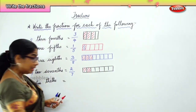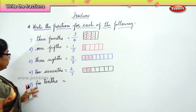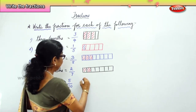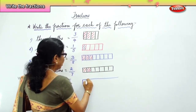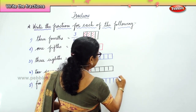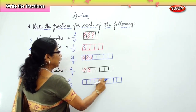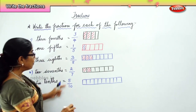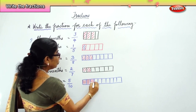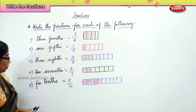Now you have five-tenths. Five-tenths is five parts out of ten parts. Here we have five parts out of ten: one, two, three, four, five, six, seven, eight, nine and ten. We have to color five parts: one, two, three, four and five. Five out of ten.